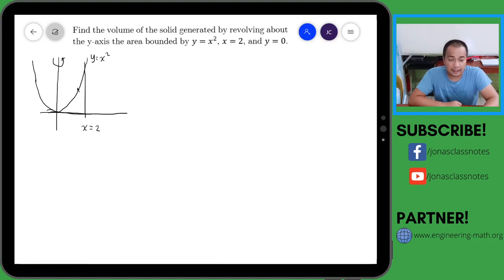To illustrate the cylindrical shell method, ang ating rectangular element dapat ay parallel dito sa ating axis of rotation. So para masagot ito using cylindrical shell method, let us construct our rectangular element na yung length niya or height niya parallel dito sa axis of rotation natin.